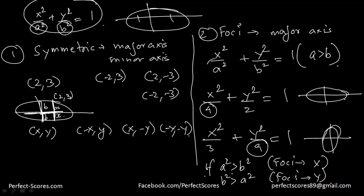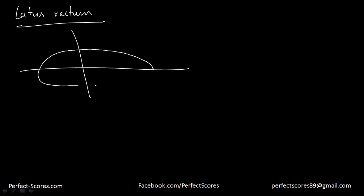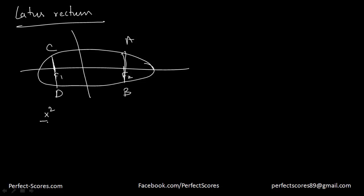Another important property — which we've also done for parabola — is the length of the latus rectum. For an ellipse, the latus rectum is the length of a perpendicular chord that passes through each focus point. Let's suppose CD and AB are the two latus recta. We need to find their length, and we know the equation of the ellipse is x²/A² + y²/B² = 1.